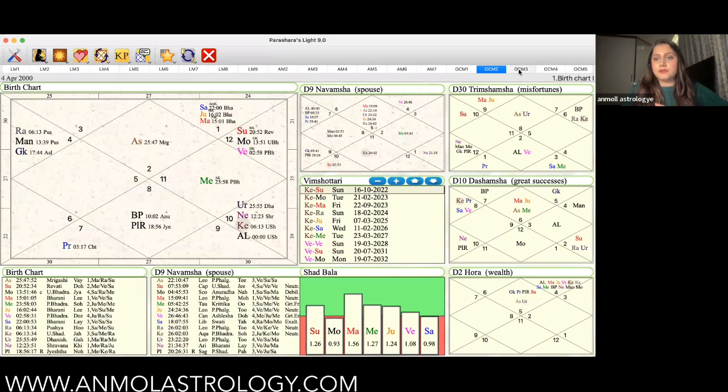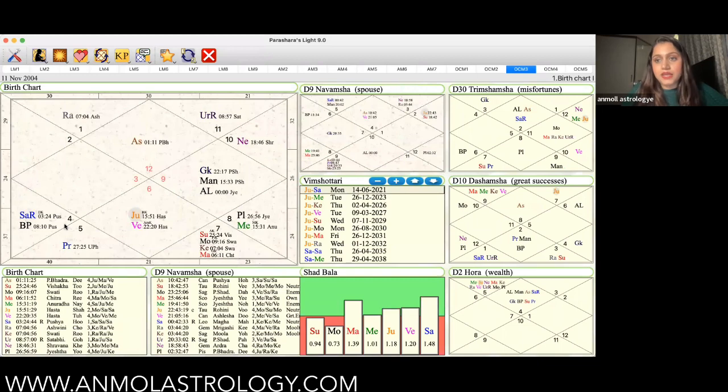Now next. So here we have Saturn in the fifth house in Pushya. The Lord of the fifth house is in the eighth house, and the Lord of the seventh house is in the ninth house. So what I feel is that this person might have a relationship in their life that will turn to a sexual encounter also or a serious thing also, but it won't go into a marriage. Why? Because the fifth Lord goes into the eighth, but there's no connection with the seventh Lord, Mercury.